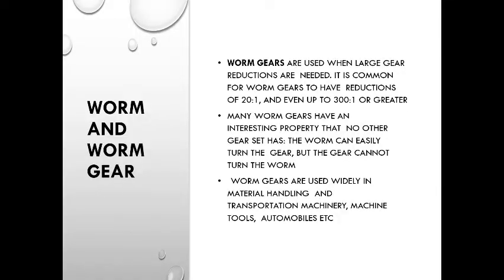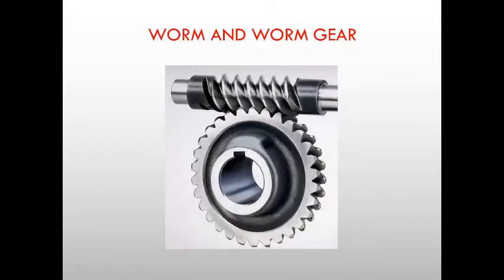Worm gears are used when large gear reductions are needed. It is common for worm gears to have a reduction of 20:1 and even up to 300:1 or greater. Many worm gears have an interesting property that no other gear set has: the worm can easily turn the gear, but the gear cannot turn the worm. Worm gears are used widely in material handling and transportation machinery, machine tools, automobiles, etc. The upper part is the worm and below that we have the gear.